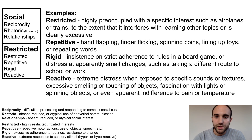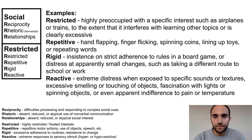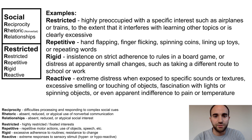There are four restricted behavior symptoms. Restricted refers to highly restricted or fixated interests. For example, this may be someone who is highly preoccupied with a specific interest such as airplanes or trains to the extent that it interferes with learning other topics or is clearly excessive.